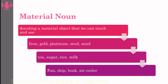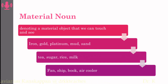And now we have tea, sugar, rice, milk, which are producers, and fan, ship, book, air coolers. These are the materials which are produced out of the raw material.